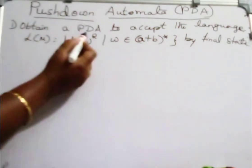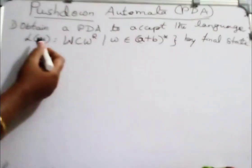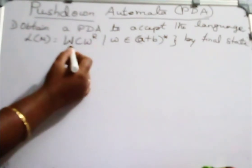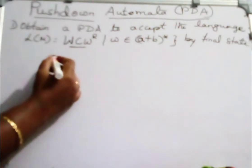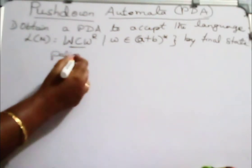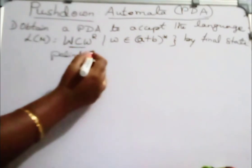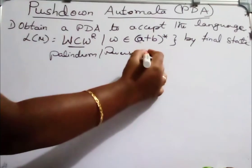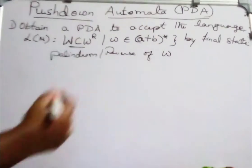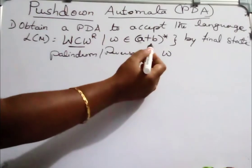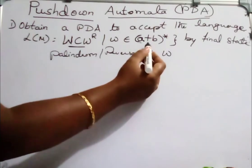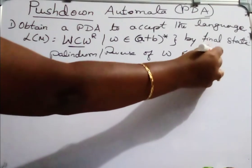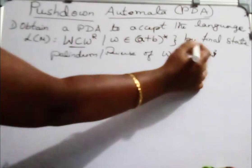That is, obtain a PDA to accept the language L of M equal to WCW^R — to accept the language of a palindrome. Palindrome means the reverse of a string. We need to accept the reverse of string W, where W belongs to {A,B}* — that is, the alphabet sigma equals the two symbols A and B. The method asked is by final state.